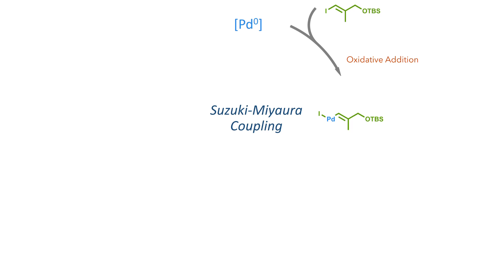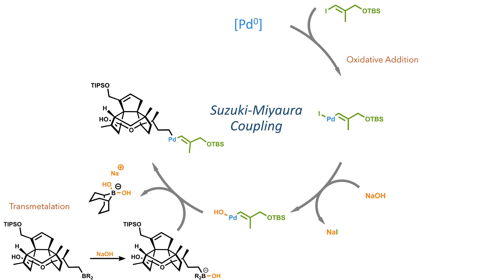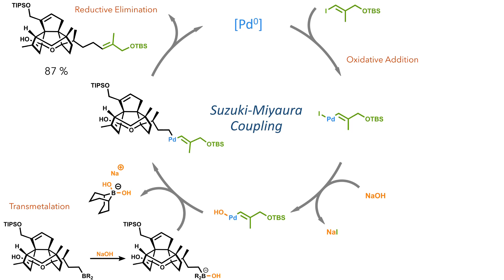The palladium undergoes oxidative addition into the carbon-iodide bond, and the iodide ligand is then displaced by hydroxide. The organoborane also reacts with sodium hydroxide, forming an activated borate that is able to undergo transmetalation with the palladium, leaving it bound to both organic fragments. A reductive elimination then occurs to form the product in an 87% yield.